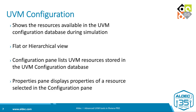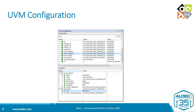The next window I'd like to talk about is the UVM configuration window. It shows the resources available in the UVM configuration database during simulation. It can be seen in both flat or hierarchical view, and the configuration pane shows all the UVM resources stored in the configuration database. The properties pane displays properties of a selected resource. Whenever you select any configuration, it will show you the underlying properties for that particular configuration.